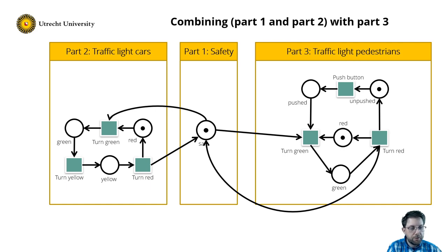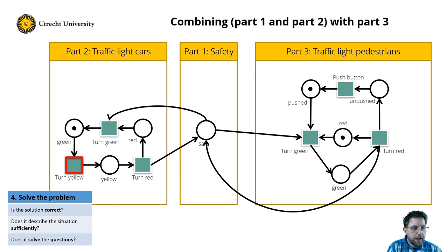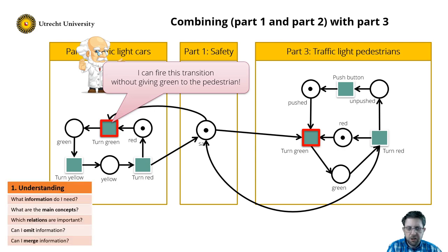Now let's check our solution — the fourth step of the reflective modeling cycle. Is the model correct? We do this by checking the token game of the Petri Net. Initially transitions turn green for the cars and push button are enabled. Let's fire transition turn green: it consumes a token from places red and safe, and produces a token in green. Transition push button is still enabled, and turn yellow is now enabled as well. Now let's fire the push button. The only thing that can happen is that the light turns yellow and then turns red. But now both the transition turn green for the cars and turn green for the pedestrians are enabled. So even though the model seems ok, it has behavior that I do not really like — I can fire transition turn green without giving green to the pedestrian. So let's move back to the understanding phase.